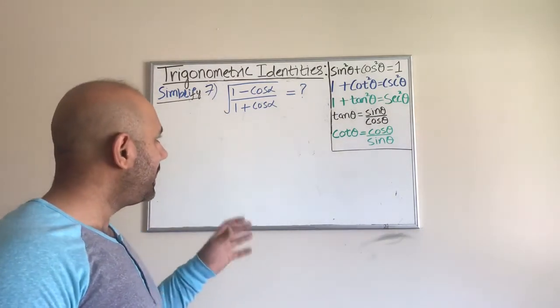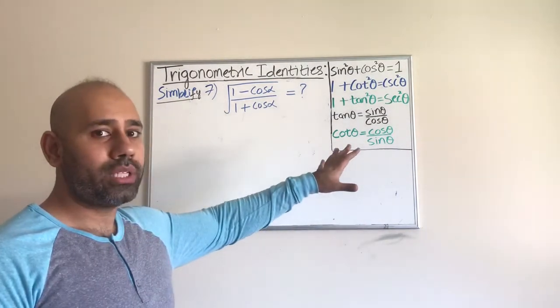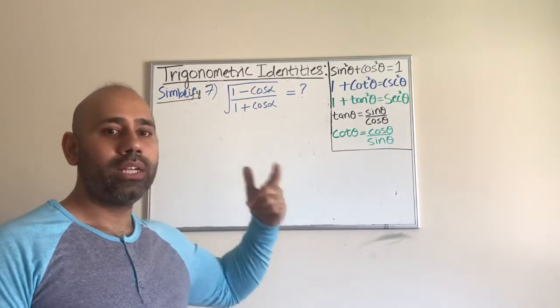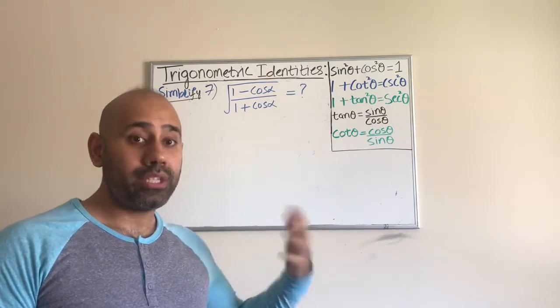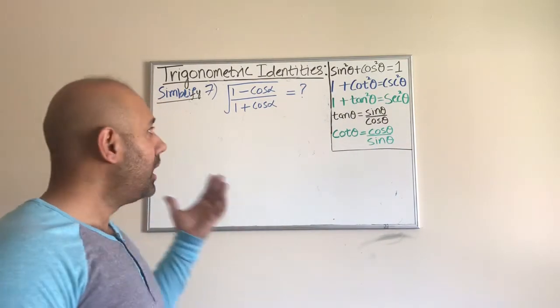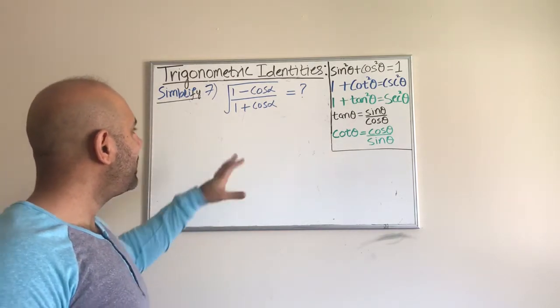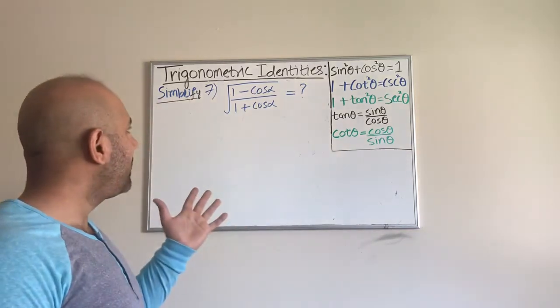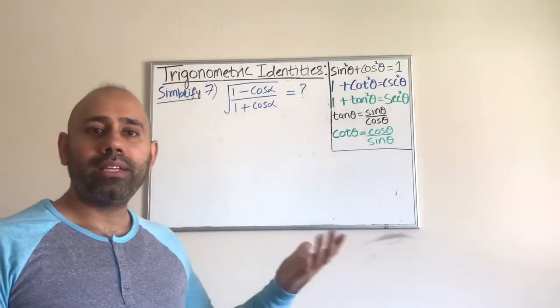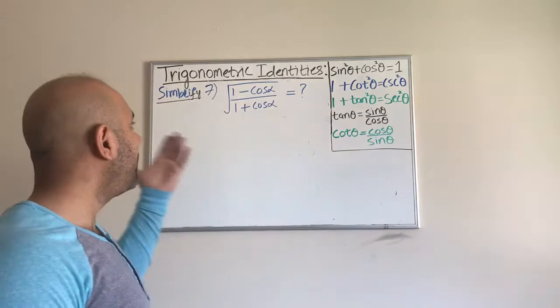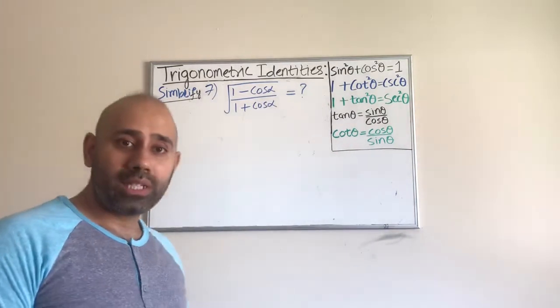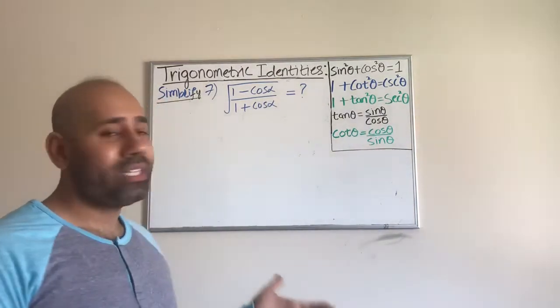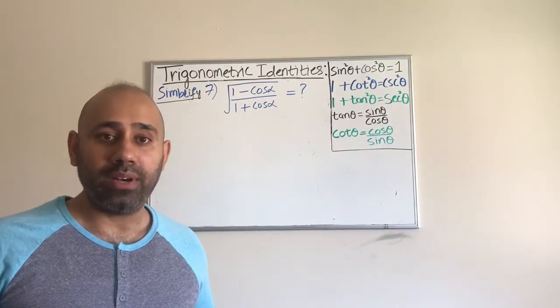To simplify something like this, we're not just going to try to use the identities right away. First, we're going to think about the algebraic methods of simplifying things. When I look at this expression in the radicals and I have the quotient, I try to see if I can cross out anything or if I can take the square root of anything. If I look at this carefully, we cannot cross out anything, neither can we actually take the radical that would help us to simplify.